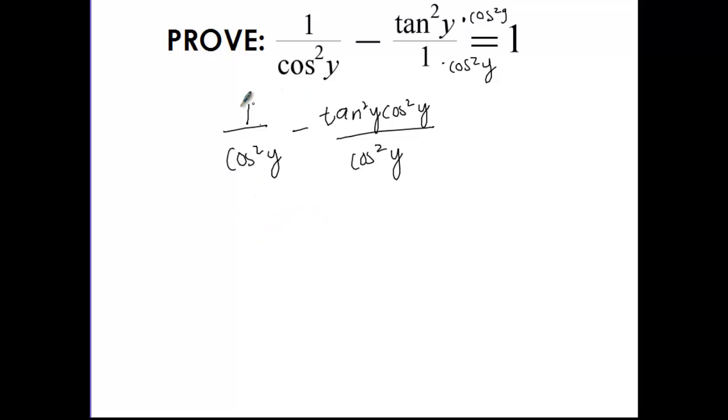So I'm going to take the numerator and I'm going to take this tangent and convert it into sine over cosine. So the numerator is going to simplify to 1 minus tangent is going to become sine squared y over cosine squared y. I leave it squared because tangent was squared. Times cosine squared y over cosine squared y.